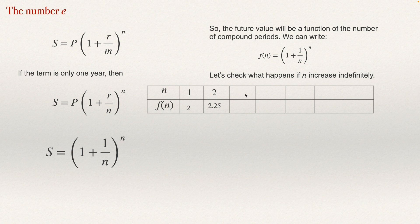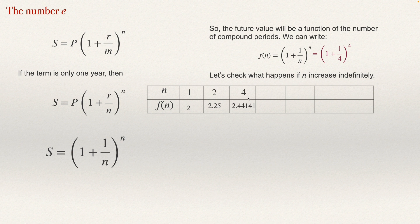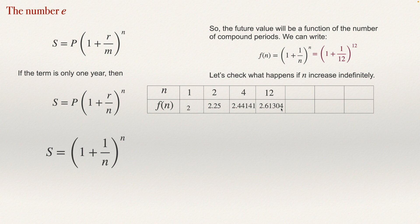Let's see what happens if this compounds quarterly, four times per year. The formula will be (1 + 1/4)^4, which equals 2.4414. Evidently it increased, but not by as much. If it compounds every month, with 12 periods, the formula is (1 + 1/12)^12, which gives 2.6134. Again there was an increase, but now a little lower.